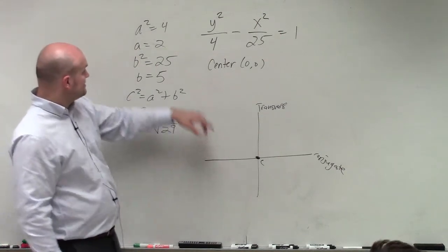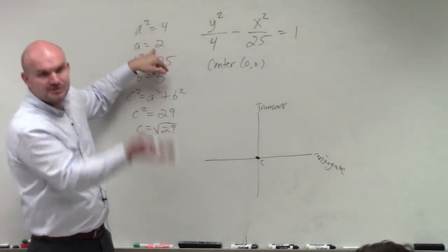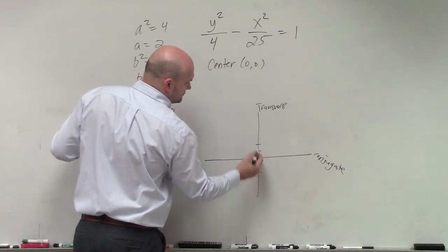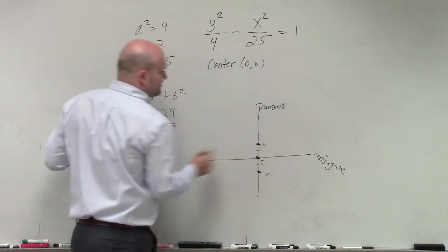So to find my vertices, I'm basically going in the positive and the negative direction, plus 2 and minus 2, going up and down those. So you go up 2 and down 2. And we'll label them vertice and vertice.